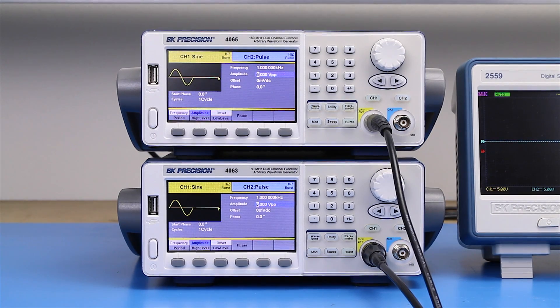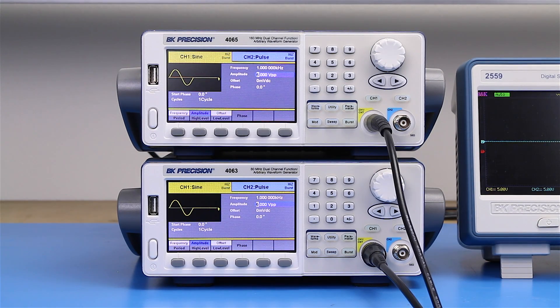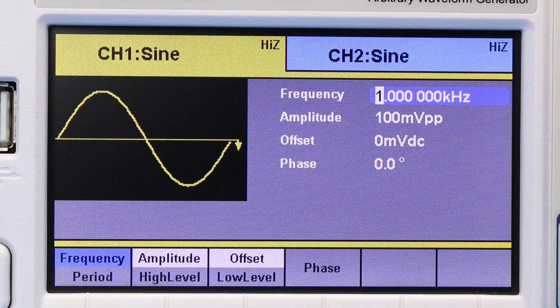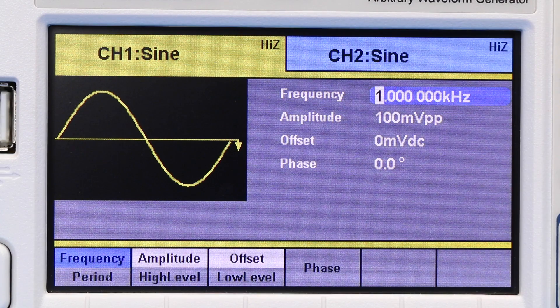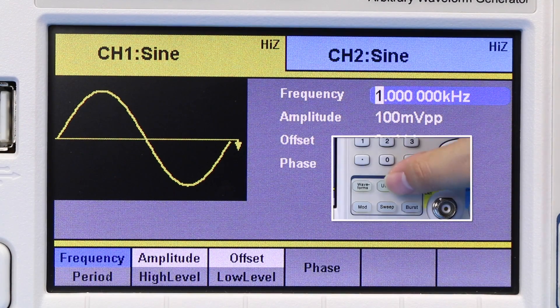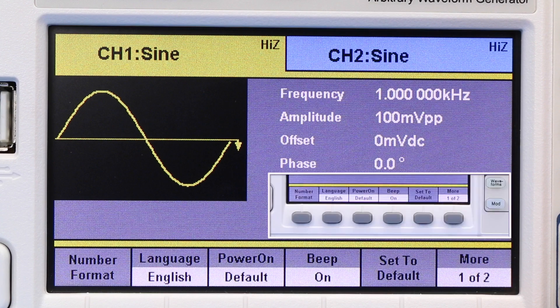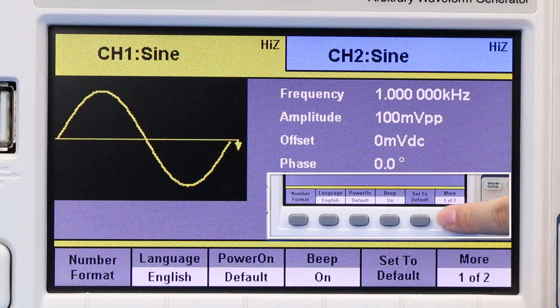For this example, we will use one of the generators as the master timebase. On unit 1, set clock source to internal in the following menu. Press utility, system, clock source.